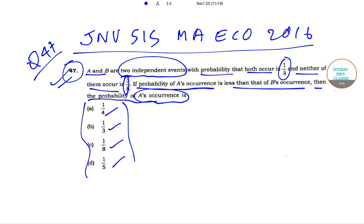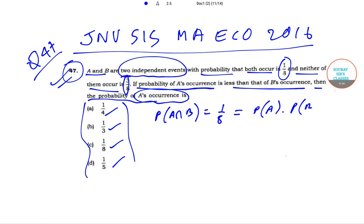A and B are independent events and probability that both occur is equal to 1 by 8. So basically we can write that P of A intersection B is equal to 1 by 8. Now we know that since they are independent events, P of A intersection B will be equal to P of A into P of B. So we can write that P of B is equal to 1 divided by 8 times P of A.